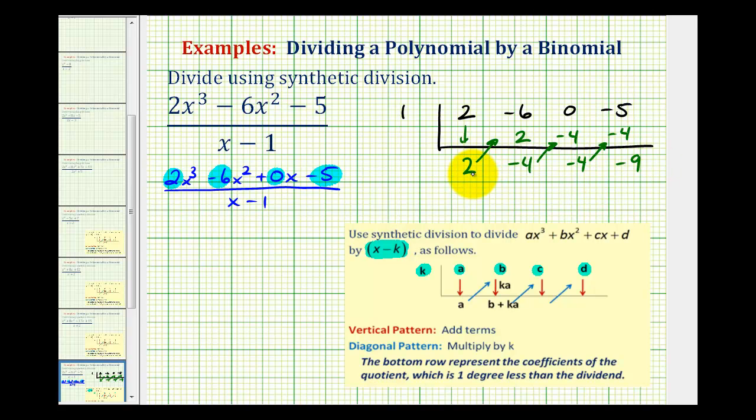So these values represent the coefficients of our quotient with this last term representing our remainder. If we have a degree three polynomial and divide by a degree one binomial, the degree of our quotient will be the difference of the degrees. Since three minus one equals two, this is the coefficient of the degree two term, this is the coefficient of the degree one term, this is our constant, and this is our remainder.